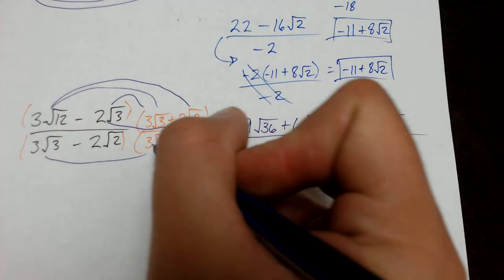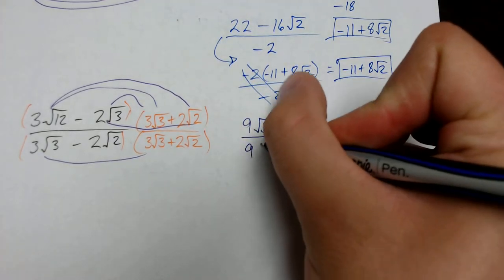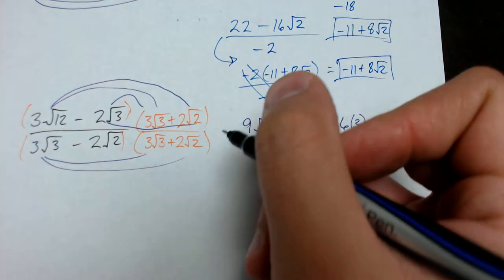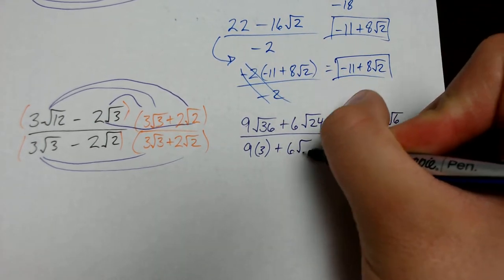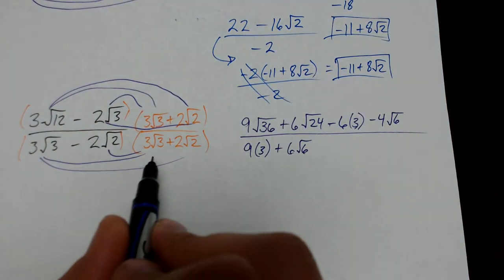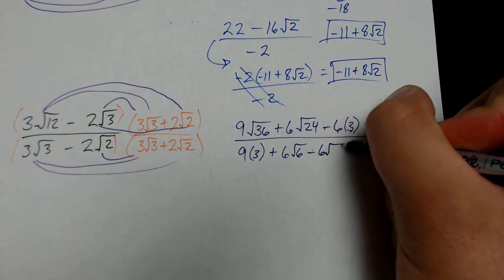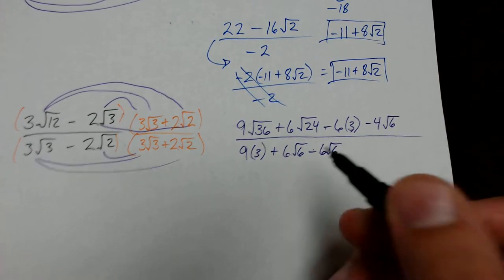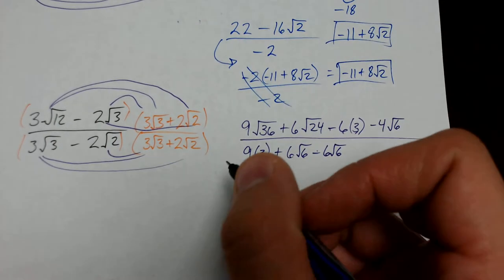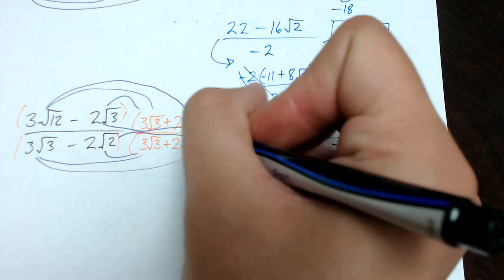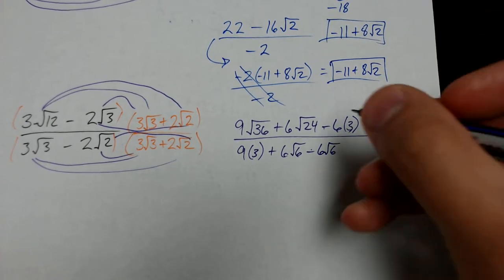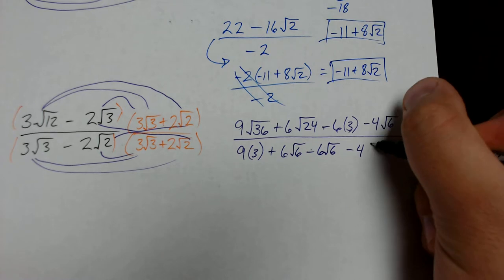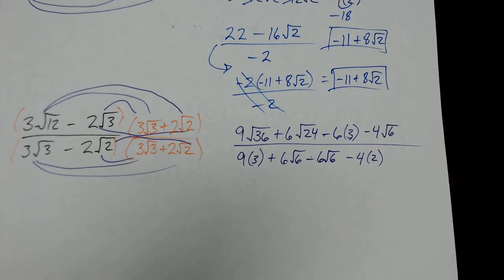Now FOIL on the denominator. First times first: 3 root 3 times 3 root 3 gives me 9 times 3. Outside times outside: 3 root 3 times 2 root 2 gives me plus 6 root 6. Inside times inside: negative 2 root 2 times positive 3 root 3 gives me minus 6 root 6. I'm looking to make sure those are the same term with opposite signs — that's how I know I'm doing things correctly. Last times last: negative 2 root 2 times positive 2 root 2 gives me negative 4 times 2.